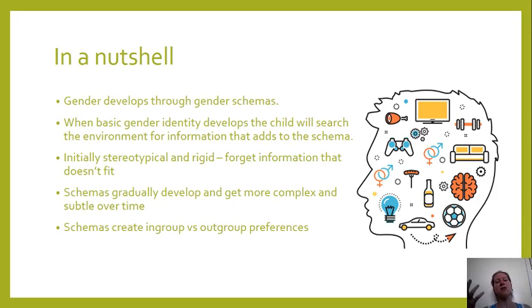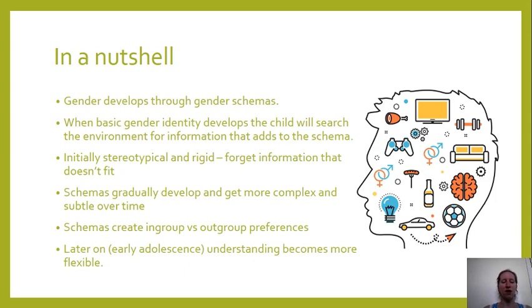When these schemas have developed, quite early on actually, they create in-group versus out-group preferences. Your in-group is the gender you belong to and have identified yourself as being part of. So a boy will think positively of the in-group — other boys — and think negatively of the out-group — other girls. Then, later on in early adolescence or late childhood, that understanding becomes more flexible. They understand that gender isn't rules but more conventions linked to society that can perhaps be broken.